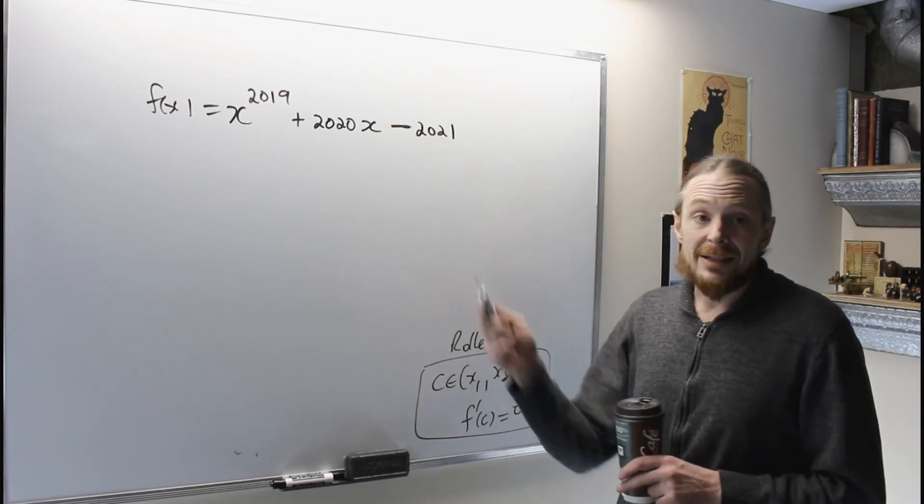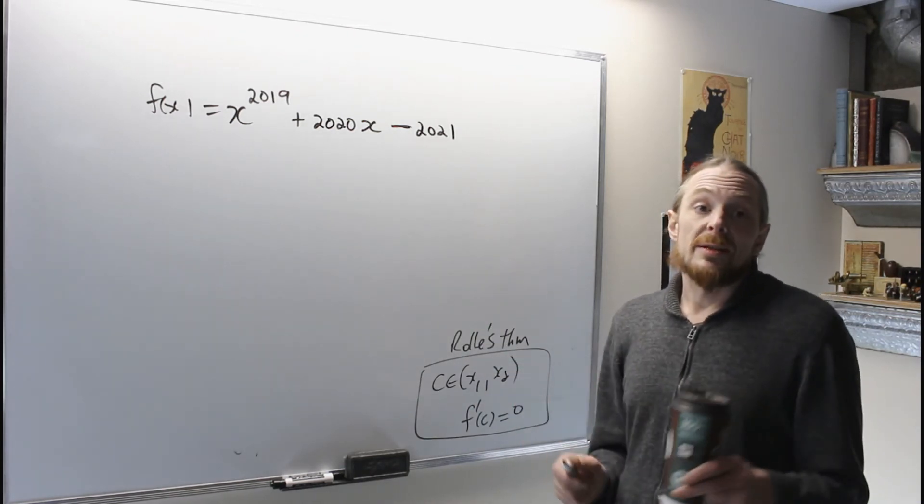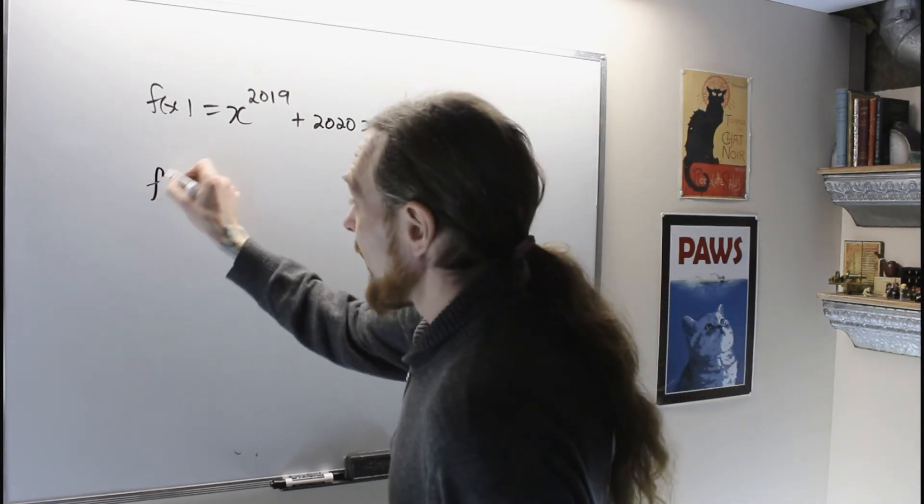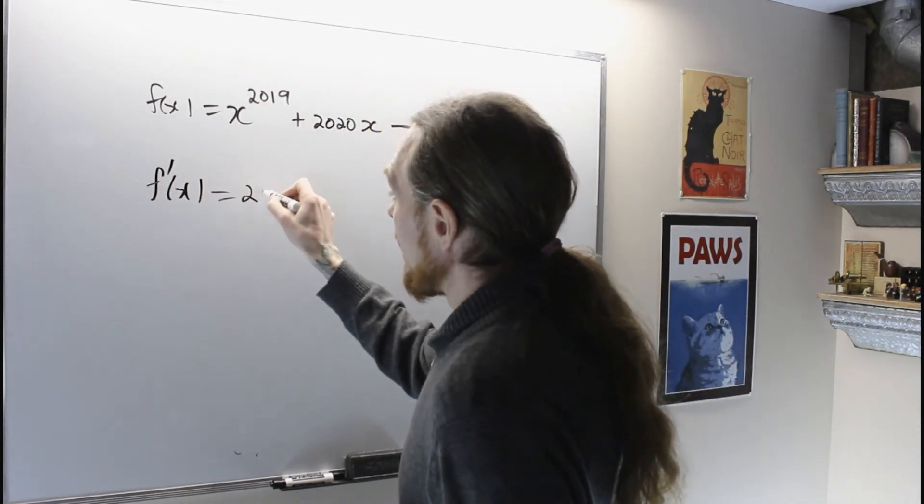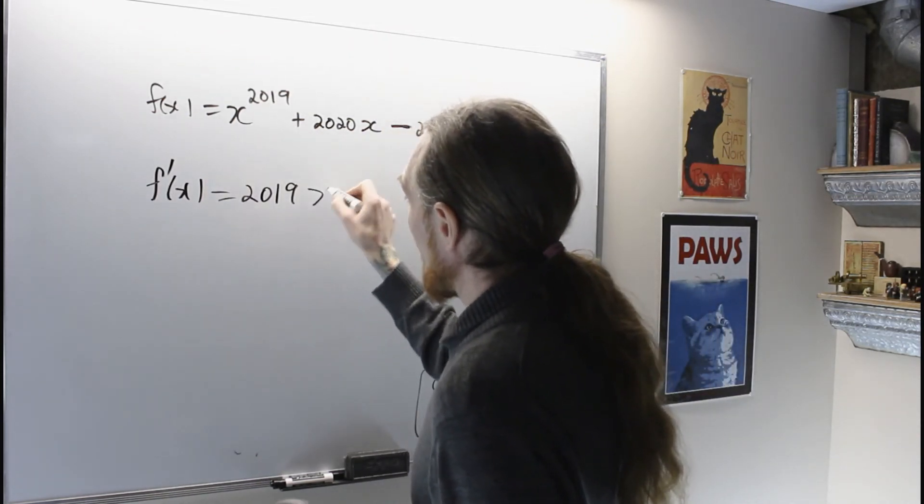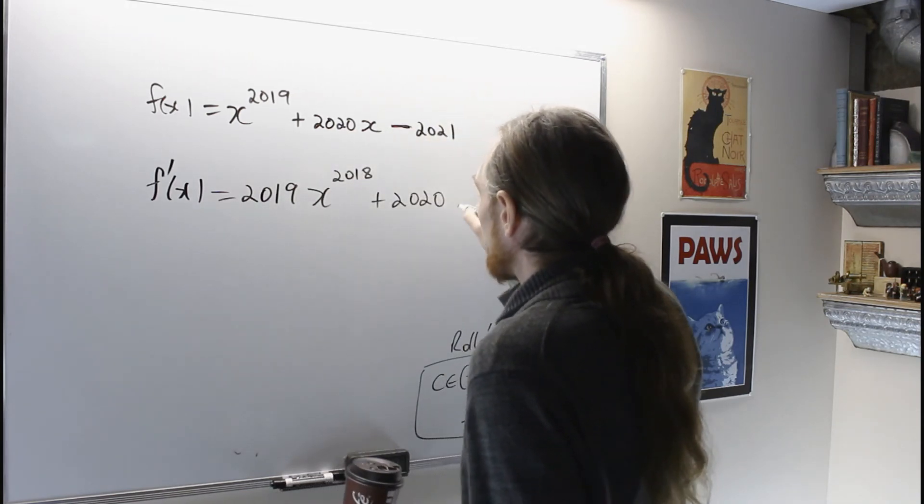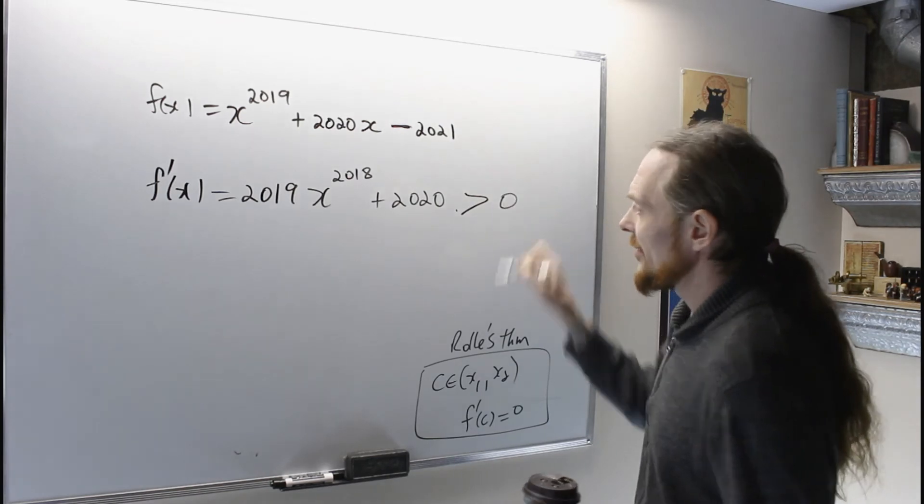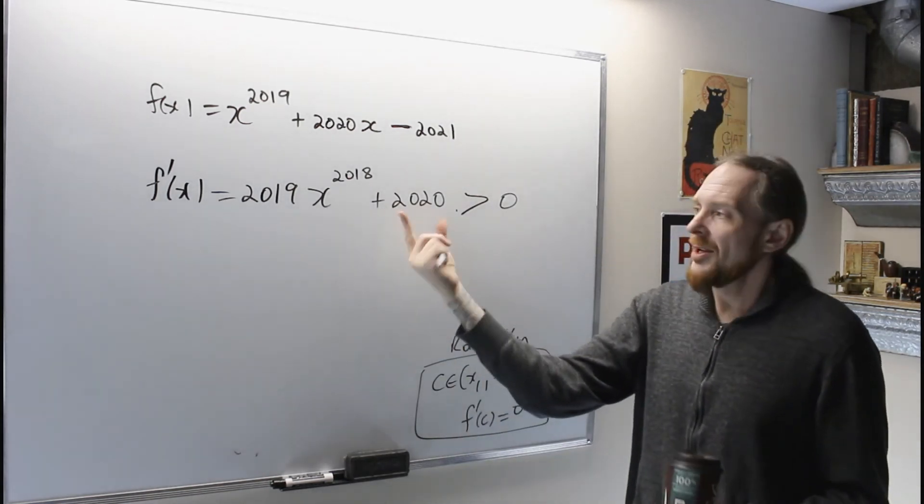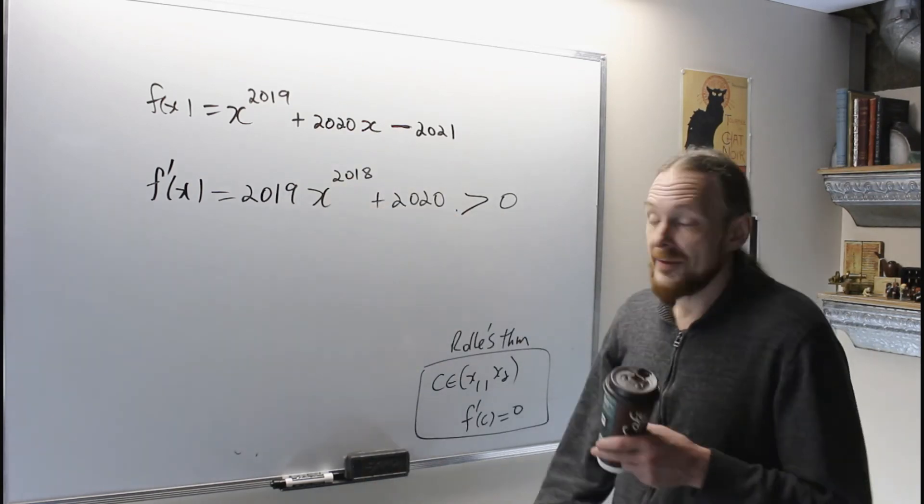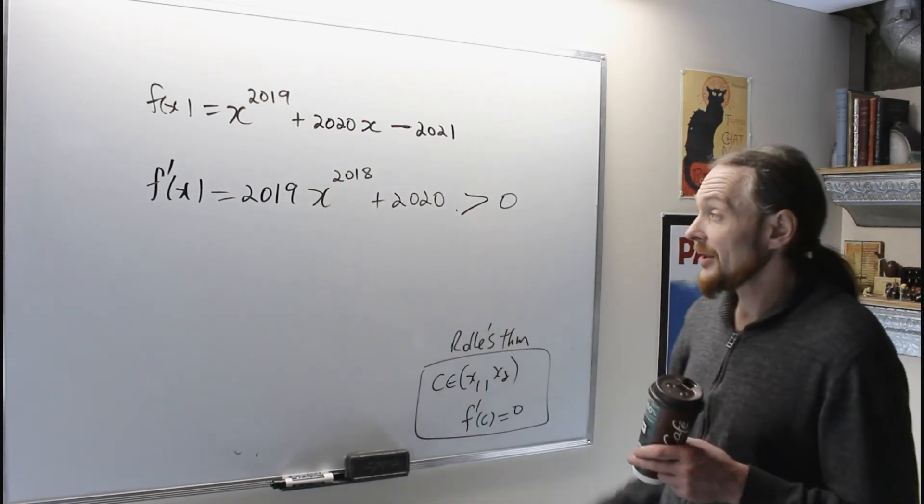Now what we're going to do is actually compute the derivative and show that it's always positive and that contradicts this statement. So the derivative is 2019 x to the 2018 plus 2020, which is always strictly larger than zero. 2020 is a positive number, x, any number that goes into an even exponent is going to be a positive number. So this thing is entirely positive.